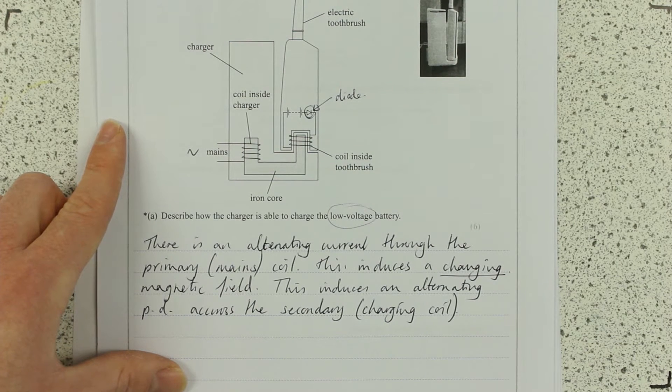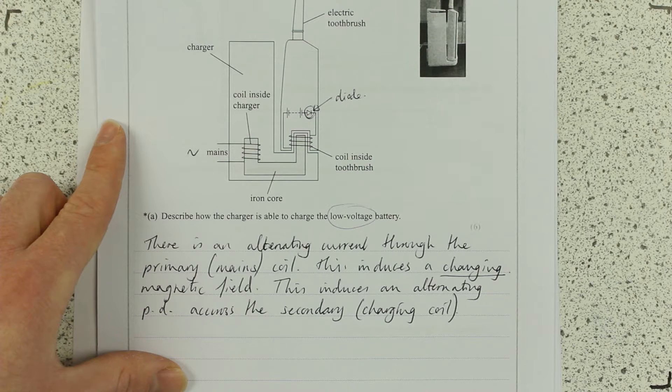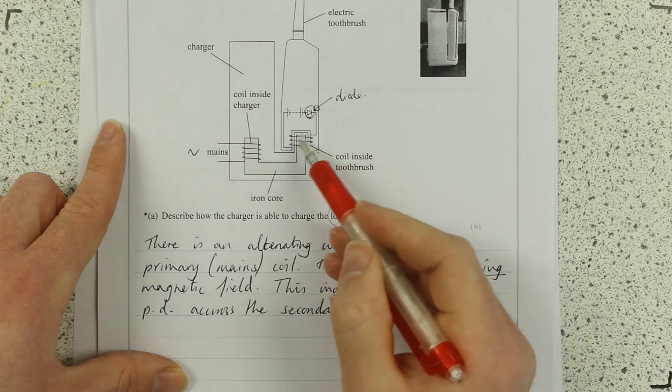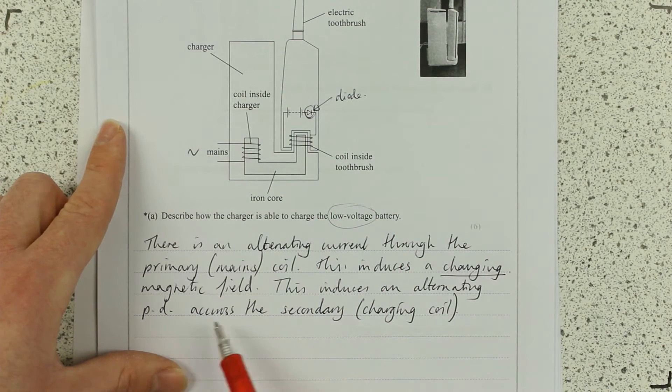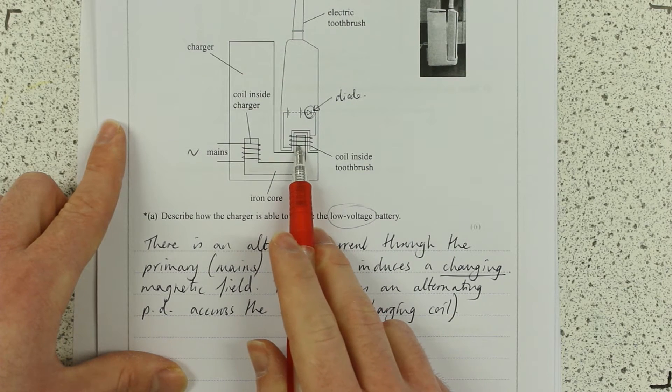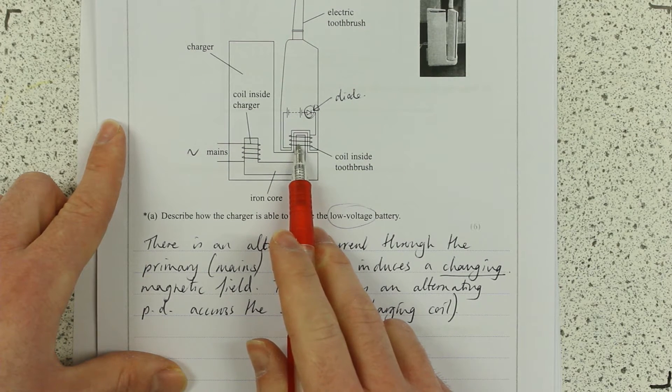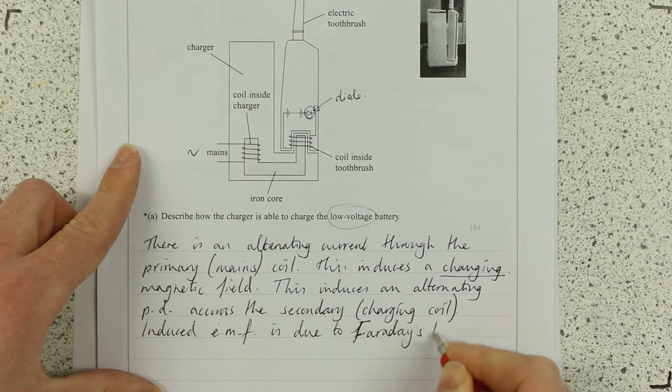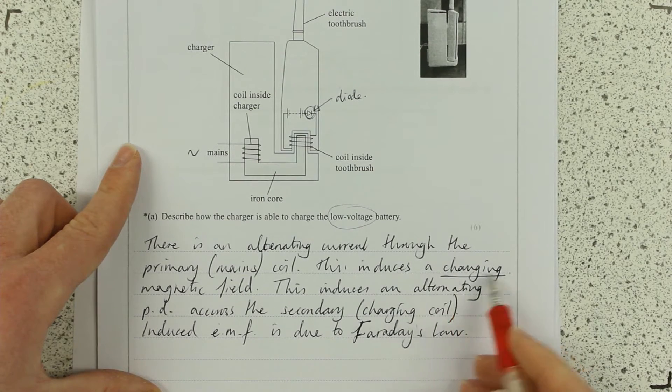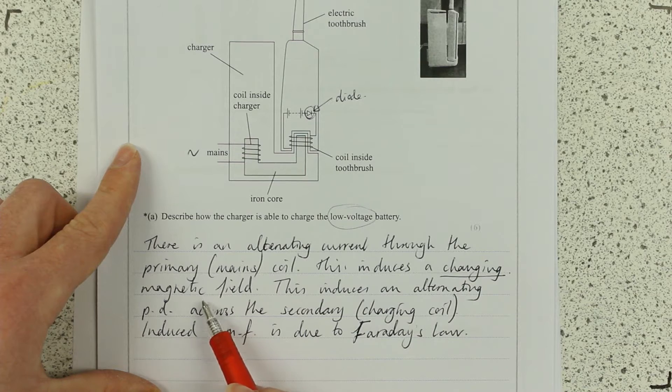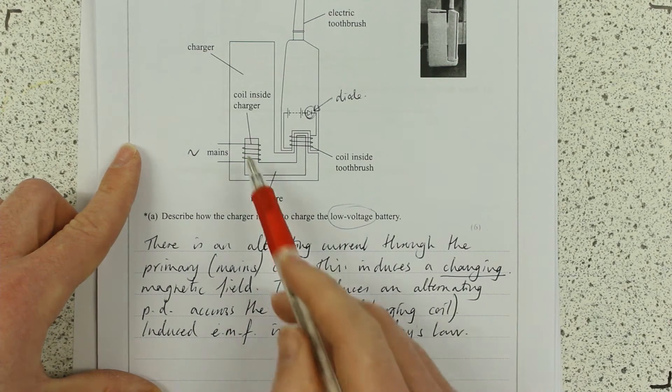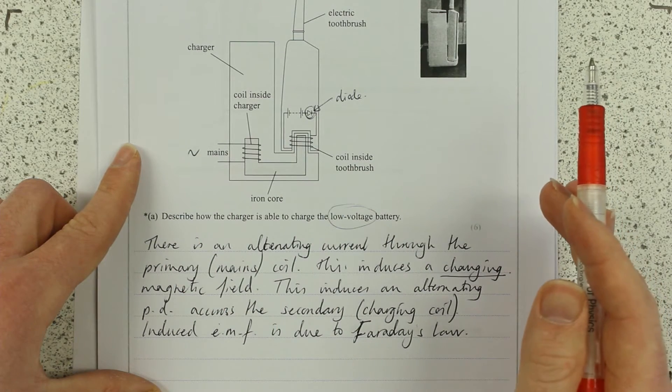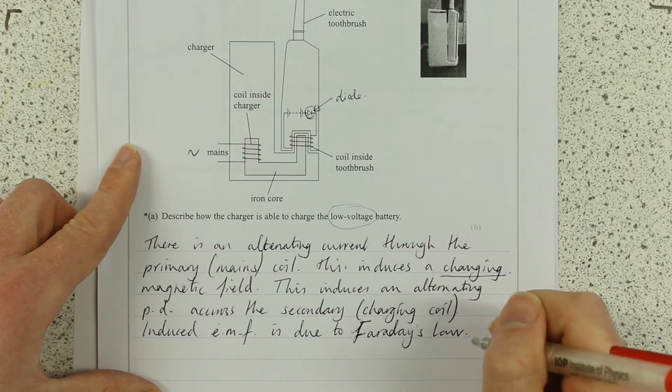Okay, so the first thing I will want to do is talk about the stuff I know that's above that. Well, this induction of this changing PD is due to Faraday's law. Okay, so induced EMF is due to Faraday's law. Now, this is defining why it must be a changing magnetic field to induce current. If it was just a DC circuit here, you would get a magnetic field, but it would only change once, and then you wouldn't get any induced EMF. So it must be due to Faraday's law.